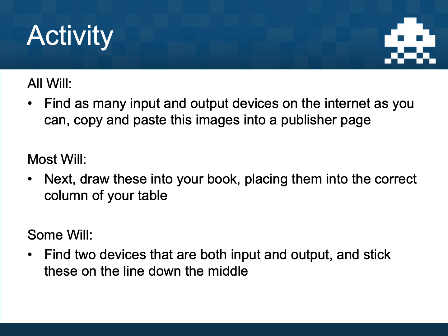Find as many input and output devices as you can on the internet, and either copy and paste those into your work if you're on a computer, or draw them into your book. Draw them into the correct column — input devices in the input column, output devices in the output column. If you find any devices that are both input and output, draw those on the line down the middle or in both columns. Aim for about four input, four output, and maybe one that is both.